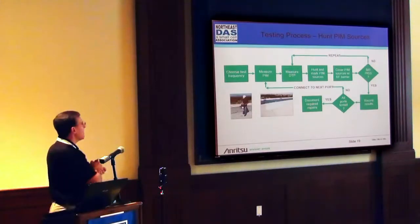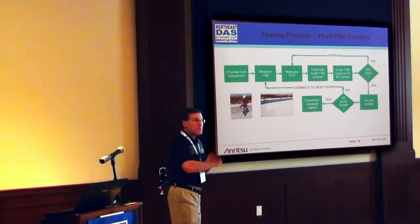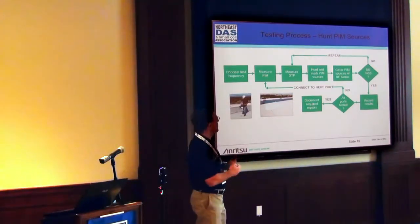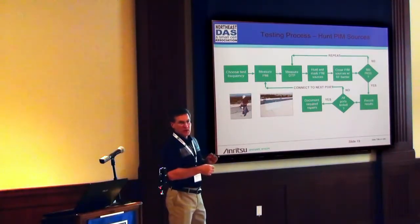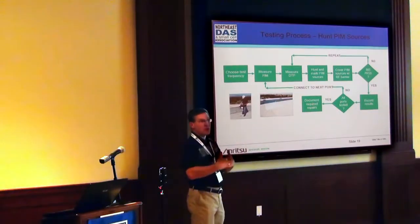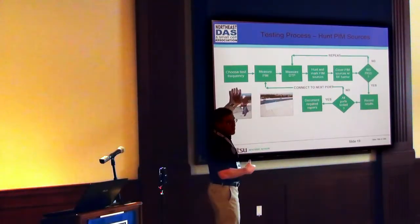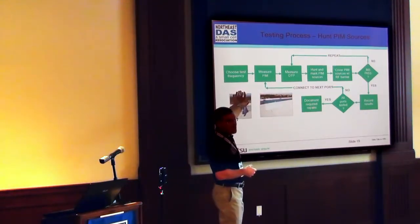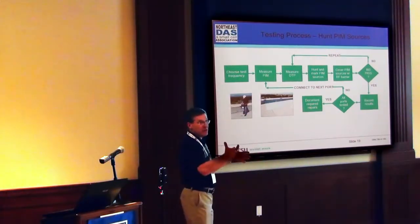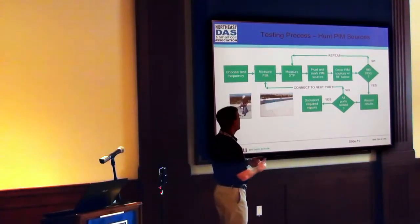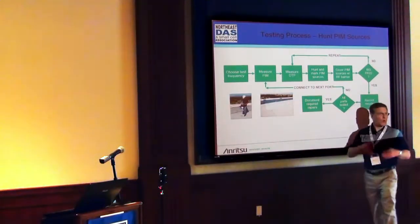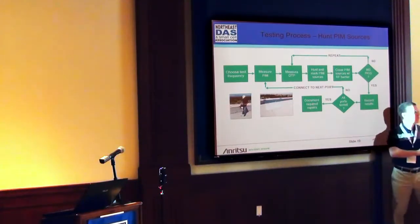For a contractor or a carrier looking to get closeout, the process is fairly straightforward. You choose the right test frequency — is it LTE upper or lower, PCS, AWS, WCS, cellular? Once you choose the right frequency matching the system you're testing, you measure the PIM. If there's a PIM problem, you turn to distance-to-PIM to see if it's outside of the system. If it is, you mark the PIM sources — where are they, what's causing them? This is where we use the PIM Hunter.